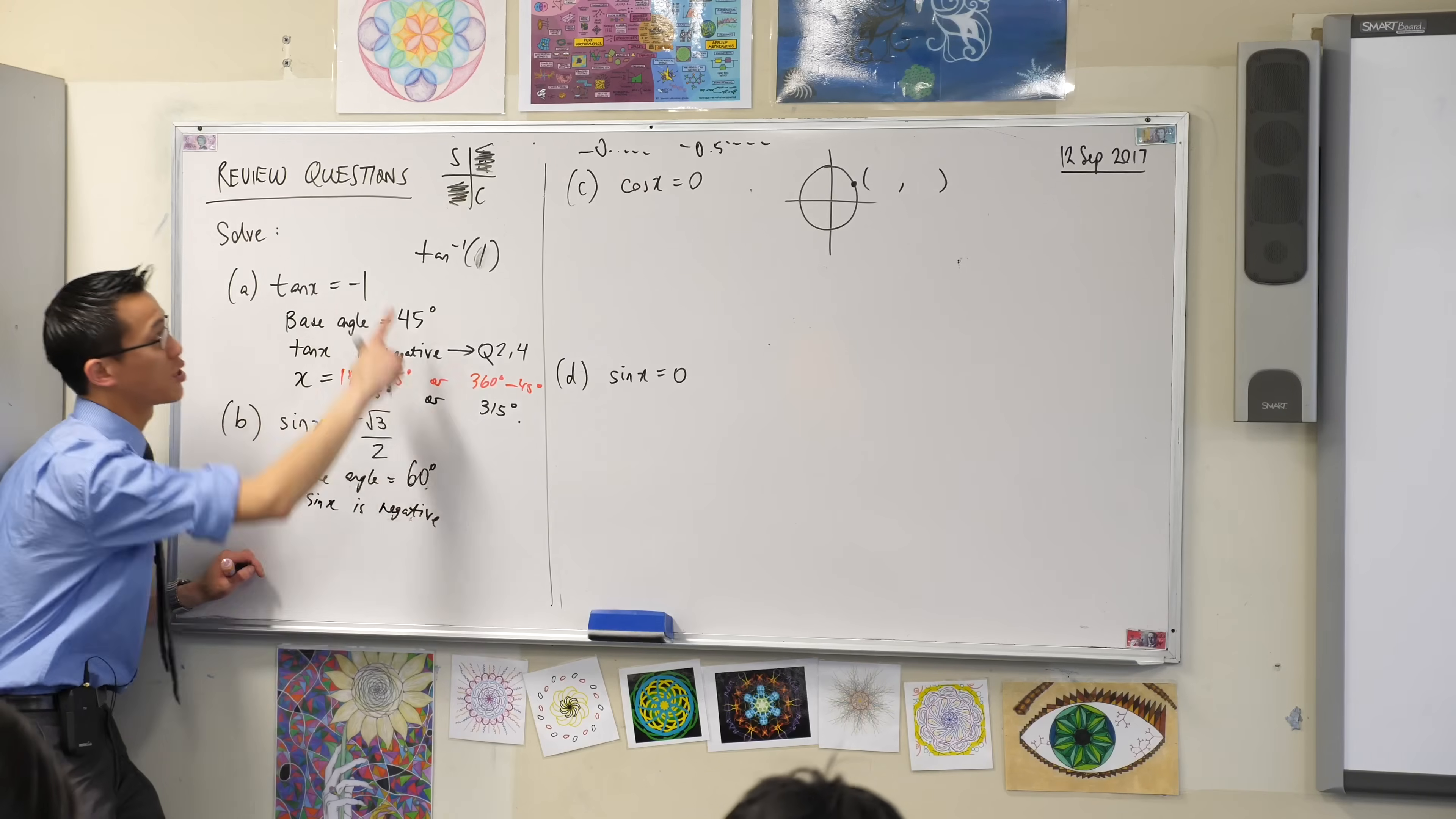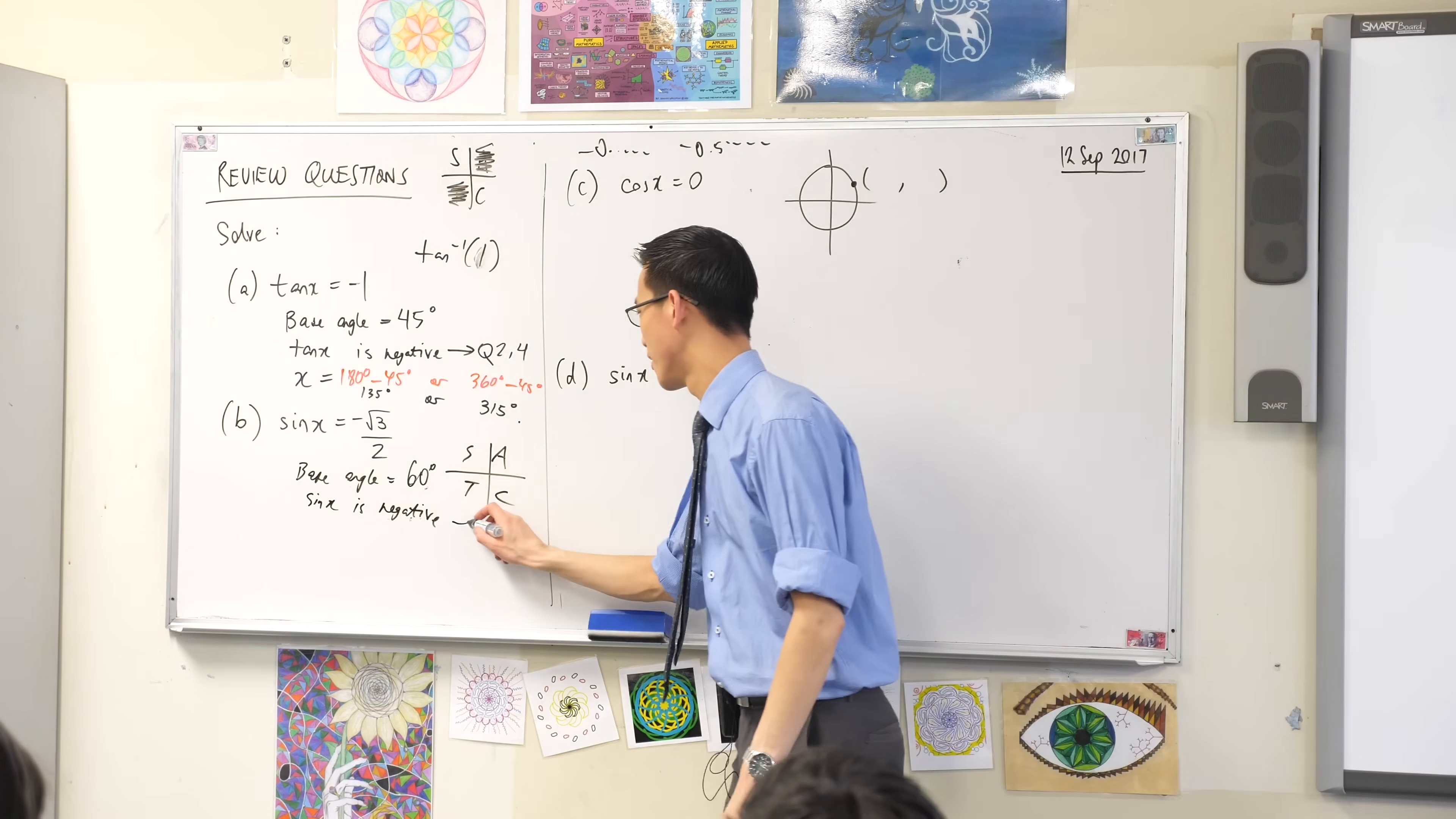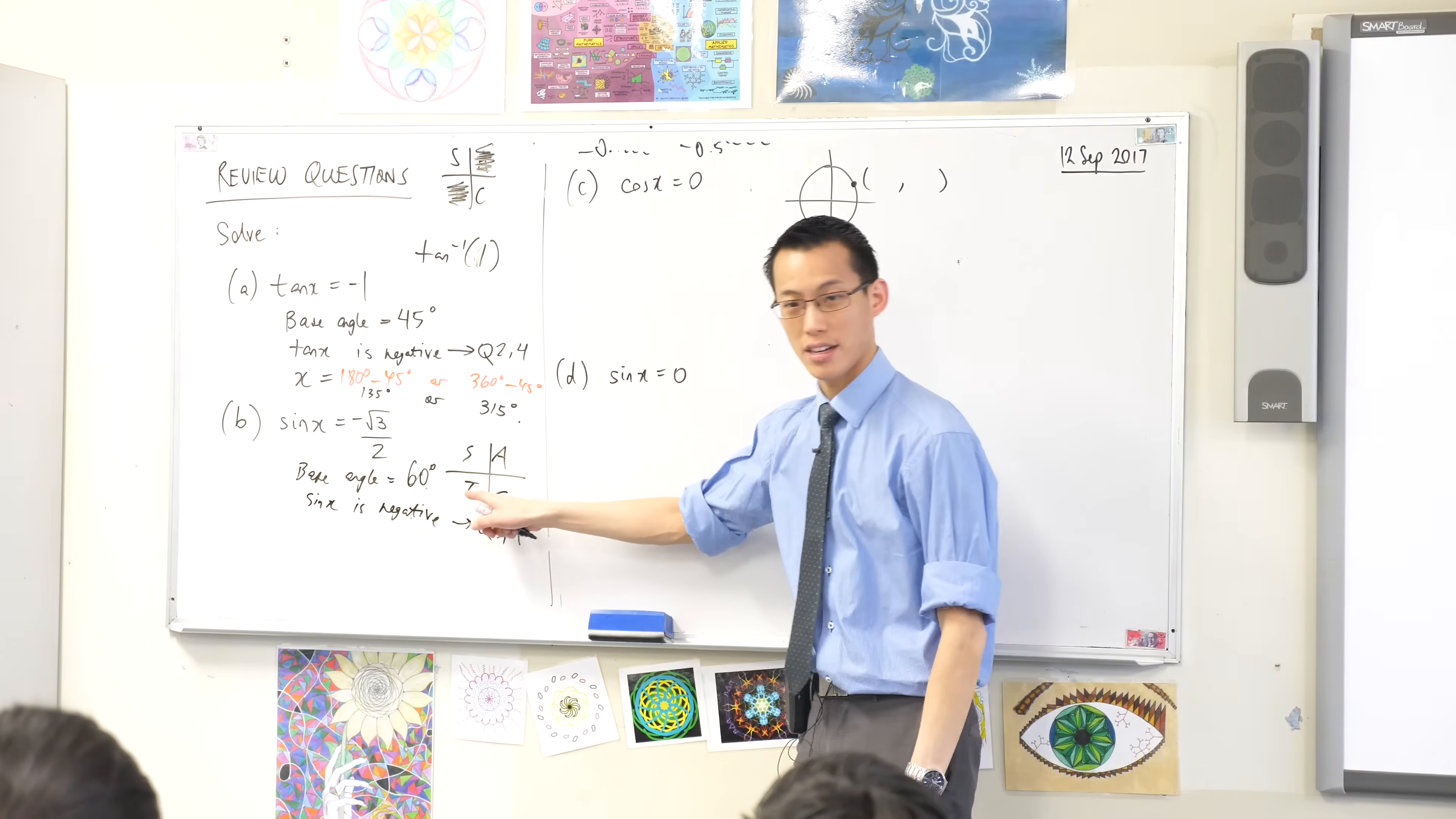I'm worried about the plus or minus of sine. So I'm going to say sine x is negative. So I need to, because I destroyed my quadrants diagram, I'm just going to draw another one. Okay. Where is sine negative? Three and four. Three and four. Quadrant three. Quadrant four. Okay. So now I need to work out, what does the base angle 60, what does it look like in quadrant three and quadrant four?